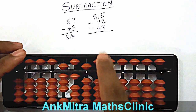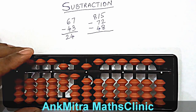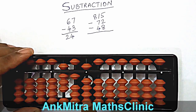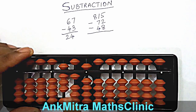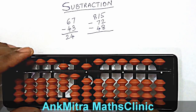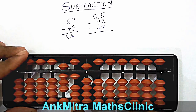Now the next number is a two-digit number, 72. So we have to subtract 7 on the tens place and 2 on the units place. For subtracting 7 on the tens place, we don't have 7 beads available on this rod. So we'll use the big friend of 7. Since 7 doesn't have a small friend at all, we'll directly go to the big friend. Big friend of 7 is 3.